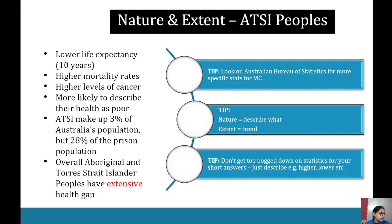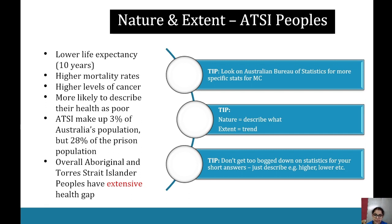Let's look at the nature and extent of Aboriginal and Torres Strait Islander peoples' health first. In terms of nature, they have lower life expectancy by an average of 10 years, higher mortality rates, higher levels of cancer, and are more likely to describe their health as poor. Aboriginal and Torres Strait Islander peoples make up 3% of Australia's population but 28% of the prison population.